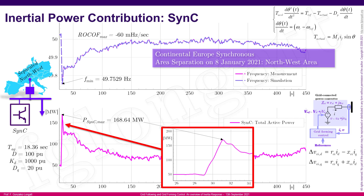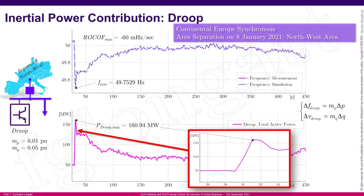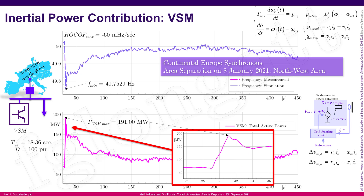The synchro converter provided 168 MW of inertia power contribution during the under-frequency event. The droop control, following a linear relationship between active power and frequency deviation, reached approximately 160 MW in a near-linear fashion. The virtual synchronous machine (VSM), which controls the internal rotational speed using active power deviation (ΔP), delivered the highest contribution at 191 MW.